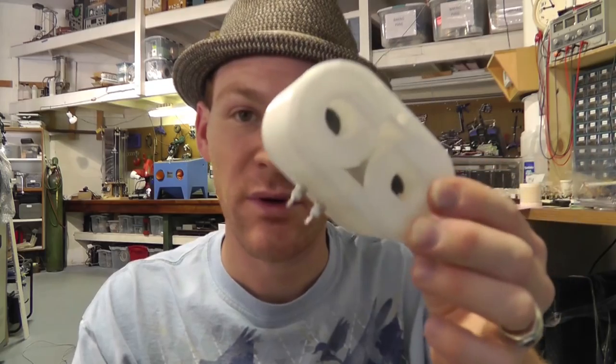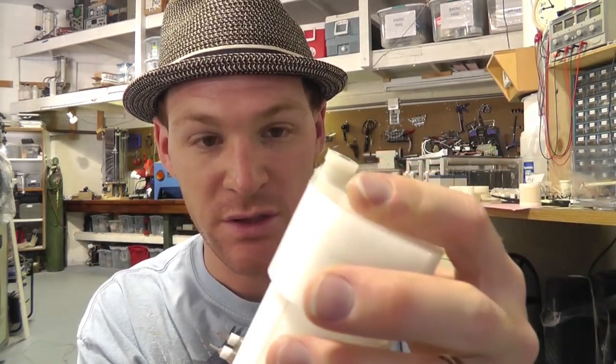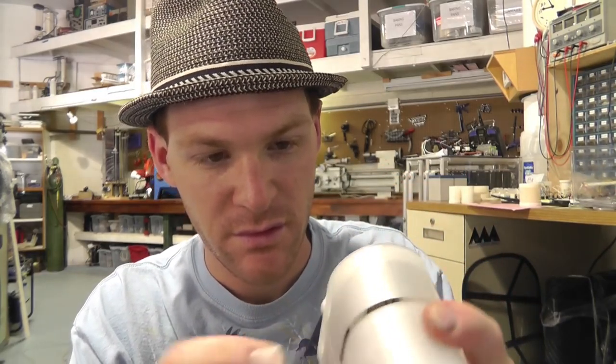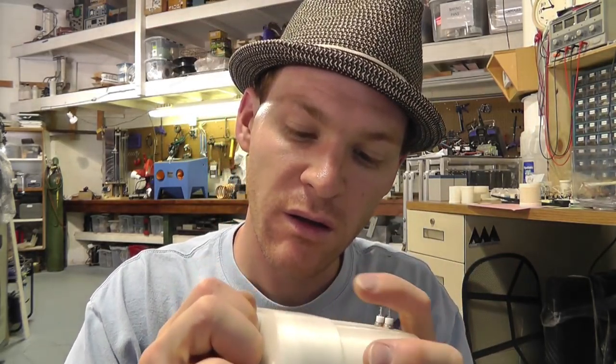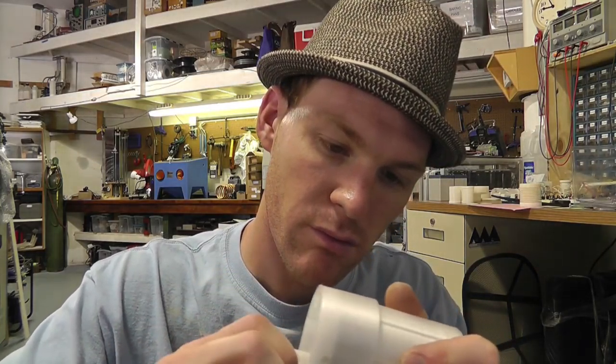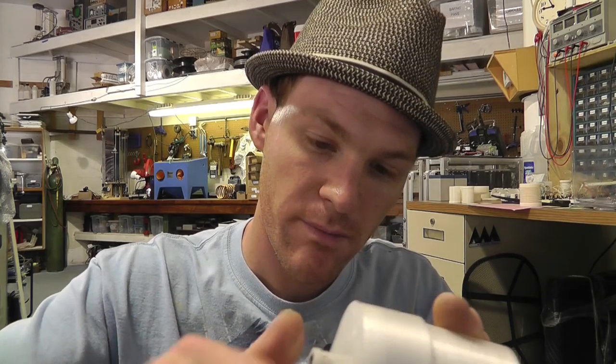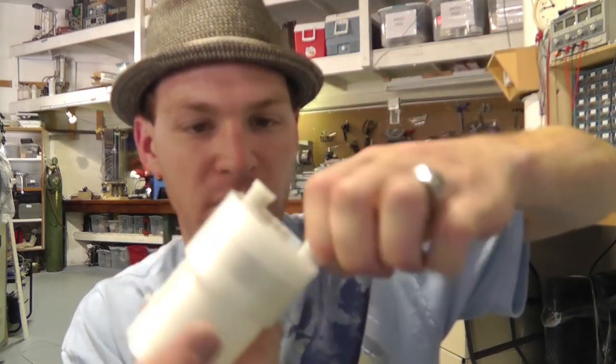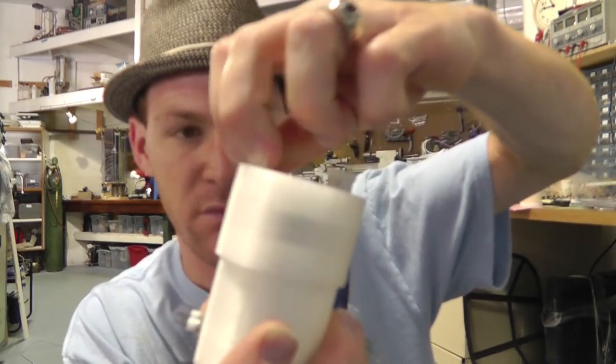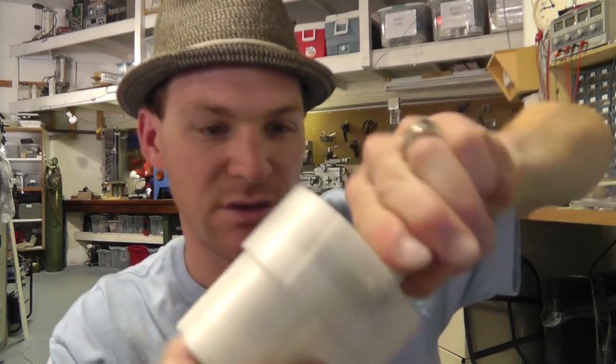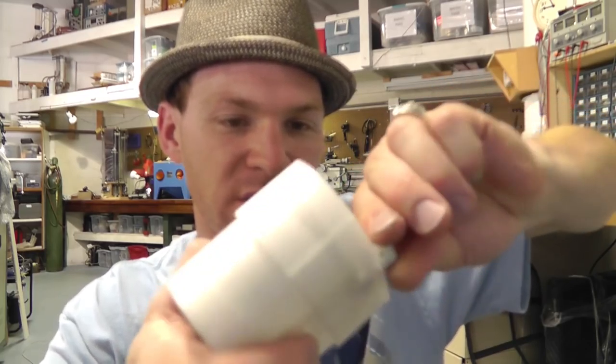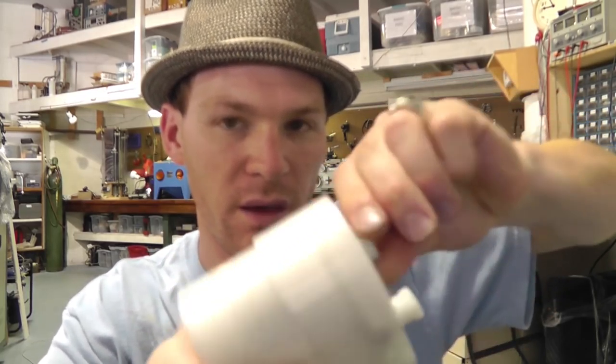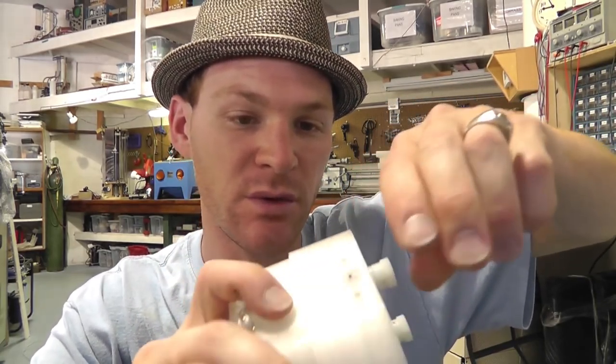The bobbins go in here like this. All 3D printed. The top goes on like this. I have to get it started. And these thumb screws are actually what makes the adjustments.